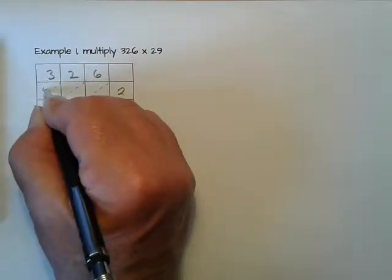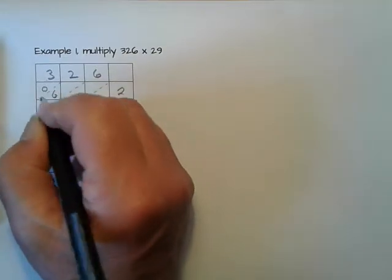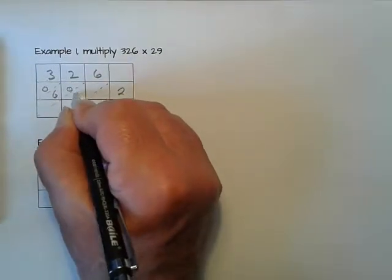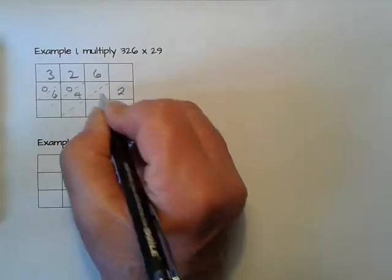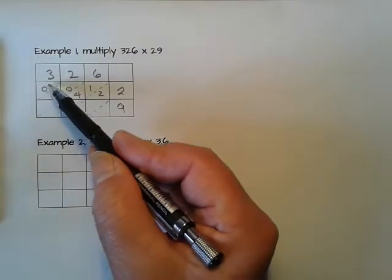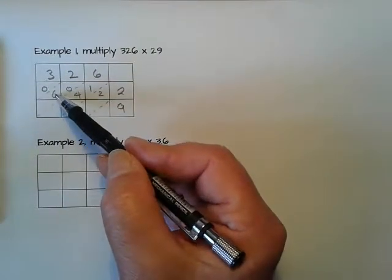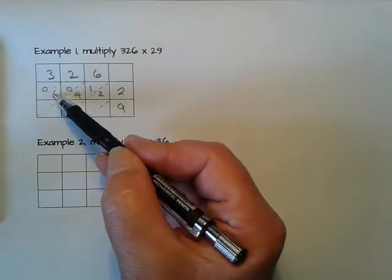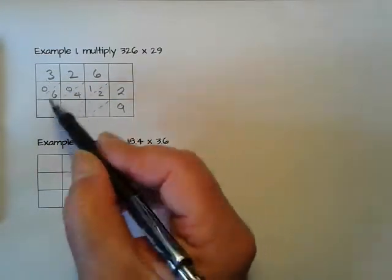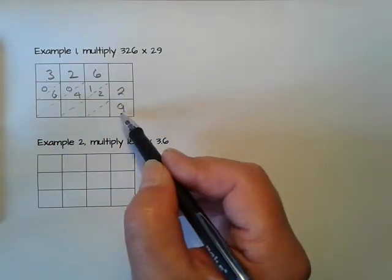I put 06. 2 times 2, 04. 6 times 2 is 12, so I put the tens digit above and the units digit below. If there's no tens, I just put a zero. Now 3 times 9...